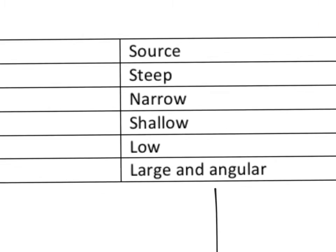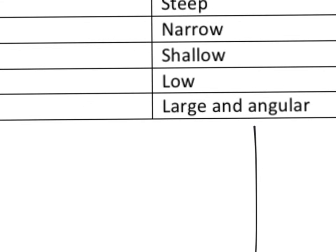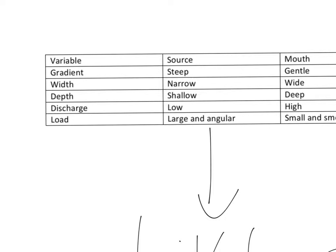The characteristics that you would need to be able to discuss in your exam are gradient, that basically relates to how steep or flat the land is either side of the river. Width, obviously how wide the river is, depth, how deep it is. Discharge, which is the amount of water which passes a certain point in the river and that relates directly to width and depth.